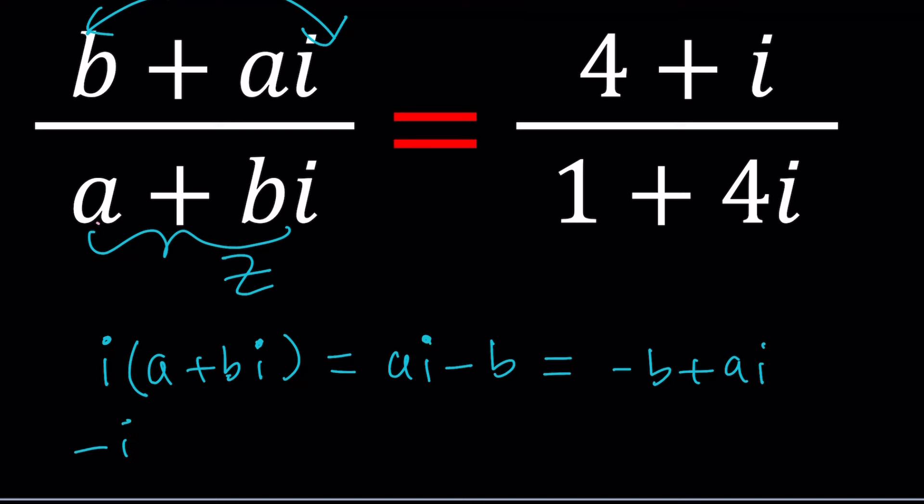Well if you multiply by negative I then you're going to get the opposite which is going to be B minus A I. Still we were missing the A this time, right? So how do you get B plus A I exactly?